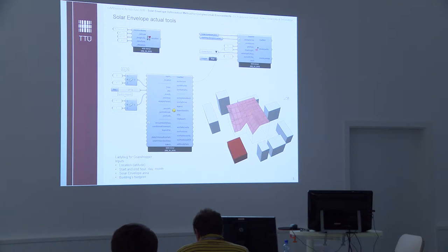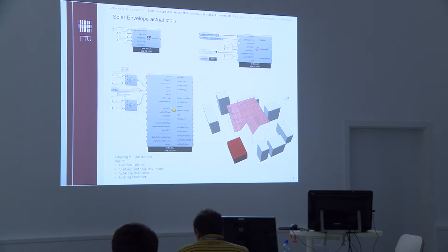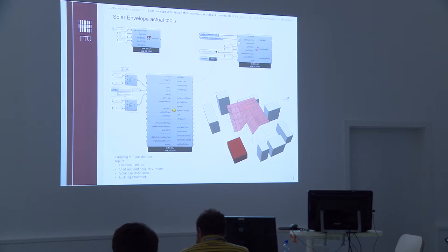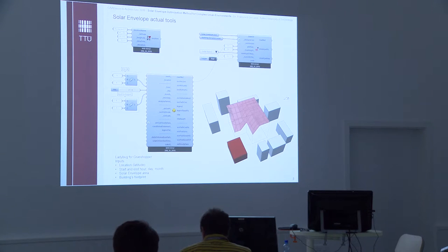Another, slightly more advanced tool — also in Grasshopper — is the environmental design suite Ladybug. In this case we still input the latitude of the location of the buildings, but we can give not only a start and end hour but also a start and end day and month, so we can be even more precise about the period. We always have the plot for the solar envelope and the building facade baseline that defines the limit on which the direct solar access must be guaranteed.